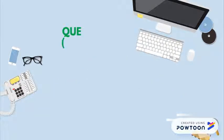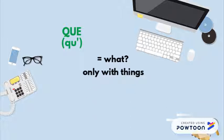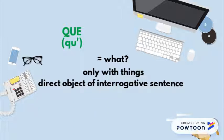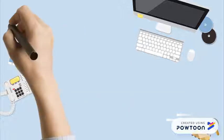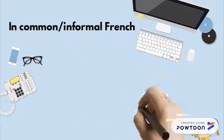Que, or qu' before a vowel, means 'what.' It is used only with things and is the direct object of the interrogative sentence. For instance, que veux-tu ? — What do you want?